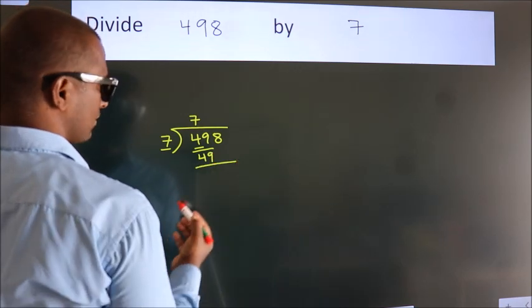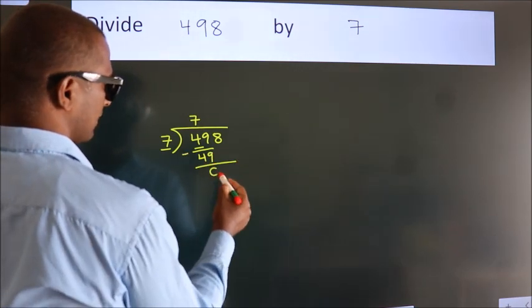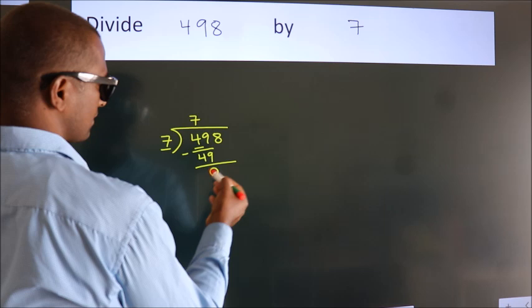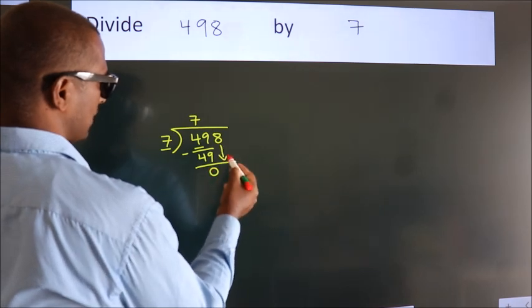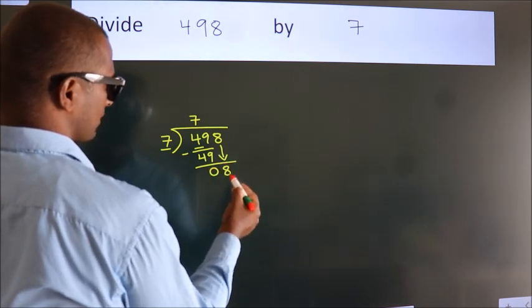Now we should subtract. We get 0. After this, bring down the beside number, so 8 down.